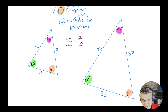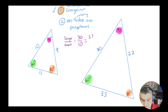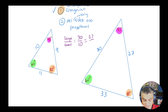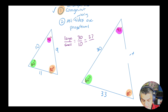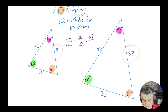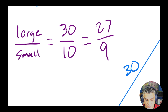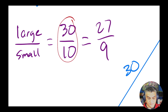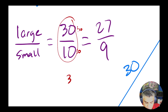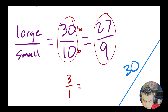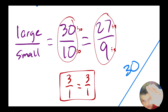Does that equal the other sides when I do the same thing? Let's do another side — 27 and 9. 27 goes on top, 9 is the matching side — pink to orange — so 27 over 9. Now let's see if these two ratios are the same. What's 30 over 10? I can divide both by 10 and I get 3 over 1. What about 27 over 9? I can divide both by 9 and I get 3 over 1. Both ratios are equal — that means both sides shrunk or grew at the same rate.